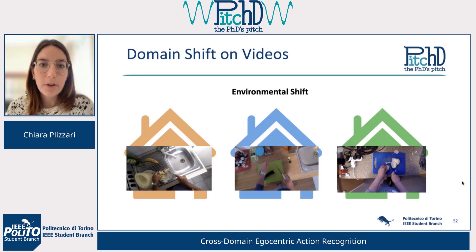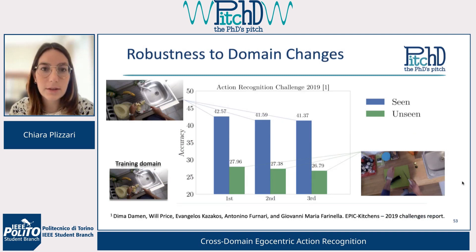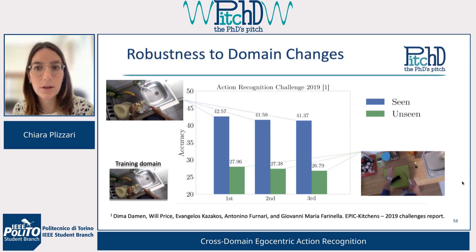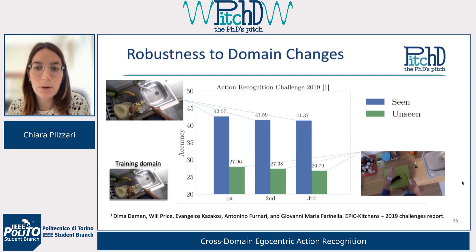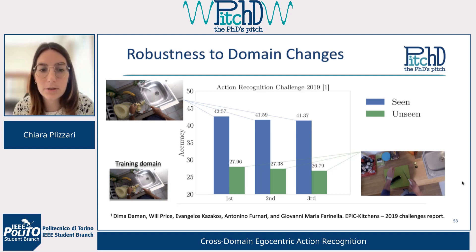Going back to environmental shift — when we train on one domain and test on another, this creates domain shift. To assess how strong this shift is, we train on a training domain and assess accuracy on the same domain (seen, shown in blue) and on a different unseen domain. There is a strong gap in performance of around 15 percent, showing that this problem is very significant in egocentric vision.